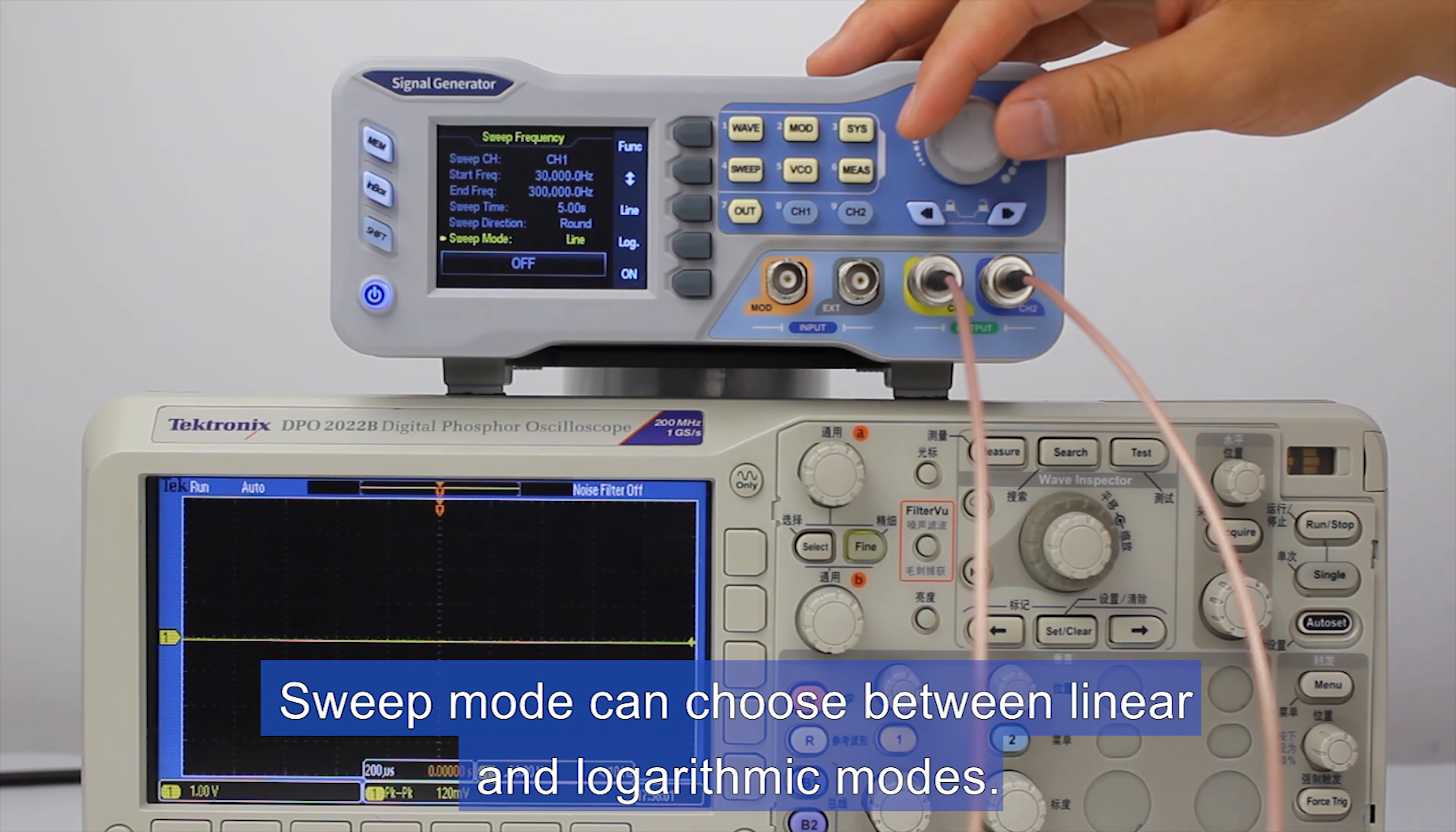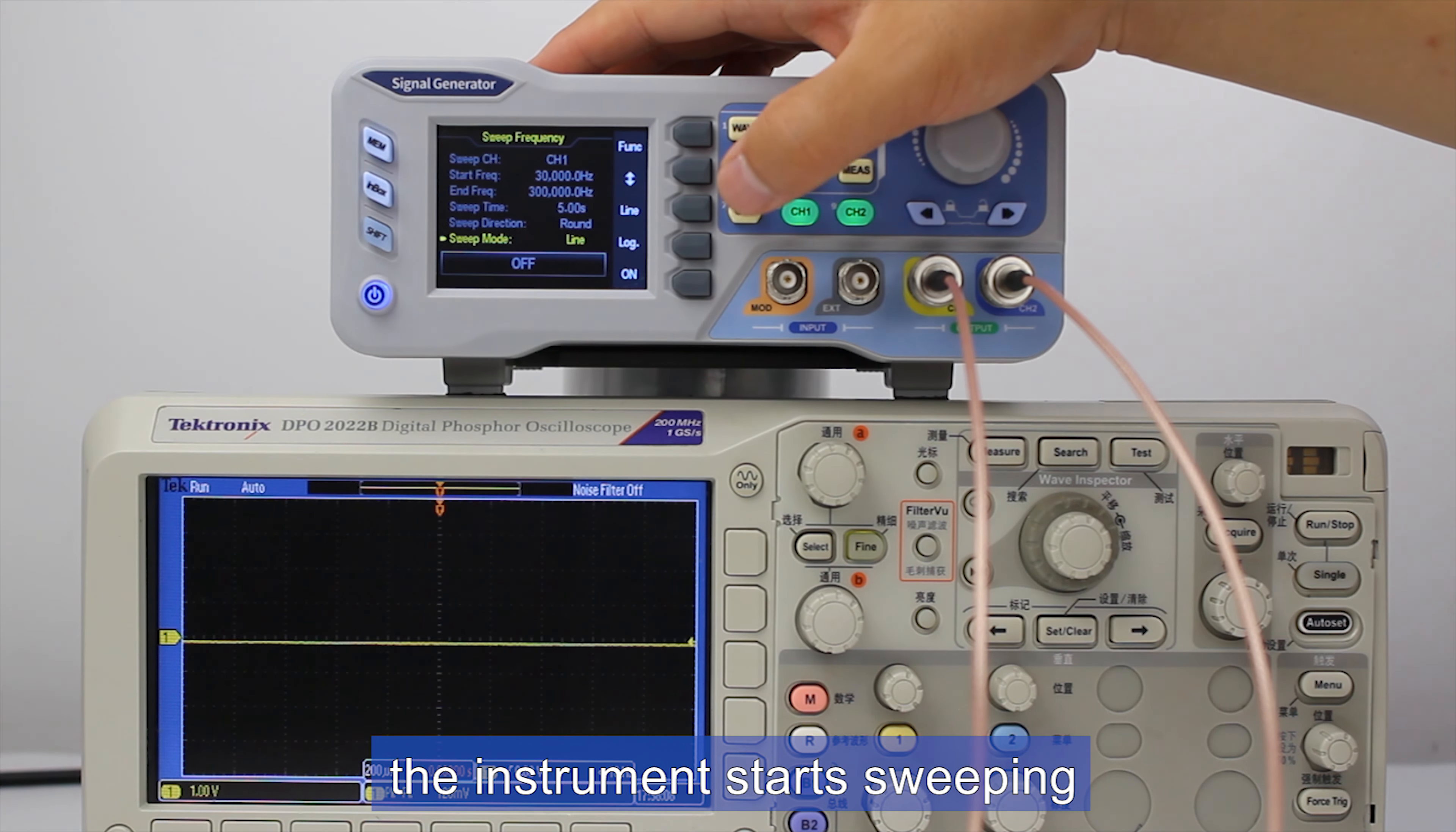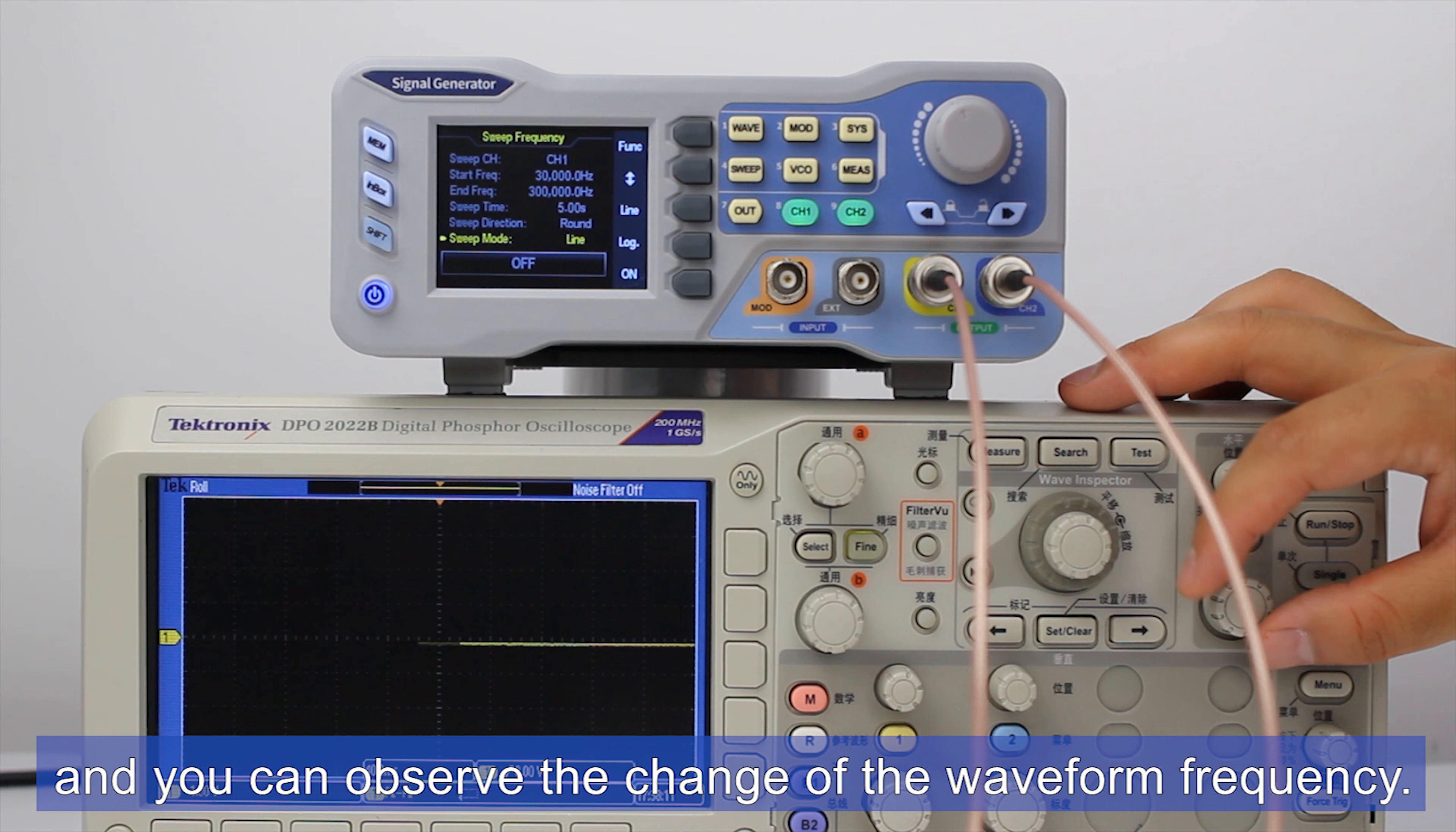Sweep mode can choose between linear and logarithmic modes. Press the ON soft key. The instrument starts sweeping and you can observe the change of the waveform frequency.